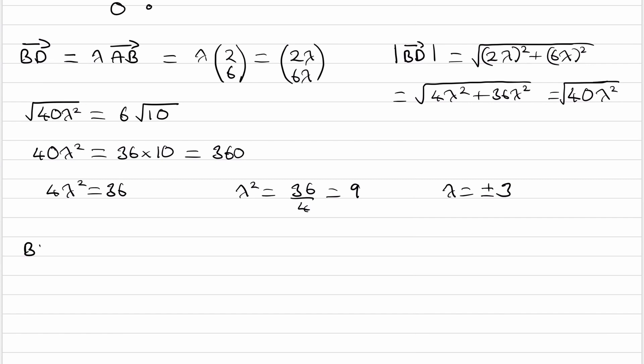So we can work out what BD is from this. BD was (2λ, 6λ). So let's put in λ = 3, so I'll times both 2 and 6 by 3, and we get (6, 18). That's one possibility. The other possibility is if we times it by -3, so (-6, -18).